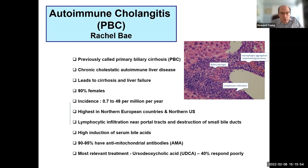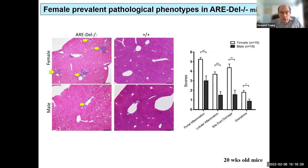I've been working on this project with Eric Gershwin at UC Davis, the leading clinician in the country on this disease. He's made a slide of 17 characteristics of the human disease, and our mouse matches 16 of the 17. Other liver labs we've shared this with believe it's the best model for PBC available. You can see in the staining that there's much more lymphocyte infiltration into the liver by the bile ducts in female mice compared to males, with greater portal inflammation, lobular inflammation, bile duct damage, and granulomas in 20-week-old females.